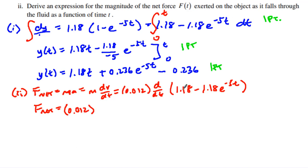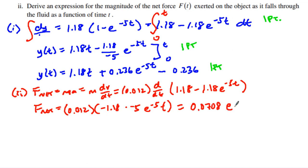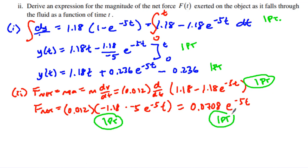The net force is equal to 0.012 times the derivative. The derivative of 1.18 is 0. For the next term, we have negative 1.18 multiplied by negative 5 e^(−5t) because of the chain rule. I can simplify all of this, and we end up getting 0.0708 e^(−5t). This problem B2 is worth three points: one for setting up the derivative of m × dv/dt, one for doing the derivative, and one for cleaning it up.